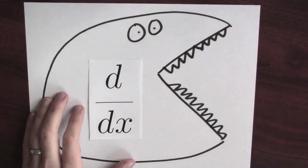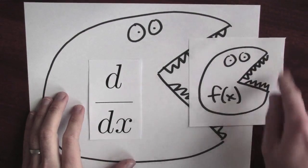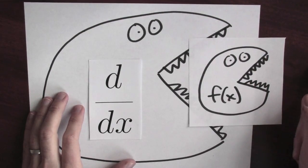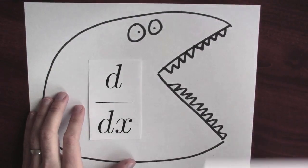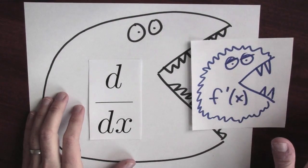First we studied numbers. Then we studied functions, which are numbers that depend on numbers or things that you do to numbers. And now the derivative. The derivative eats something which itself eats something and spits out numbers. And then the derivative spits out a new thing that eats numbers and spits out numbers. The derivative takes a function and gives you a new function.